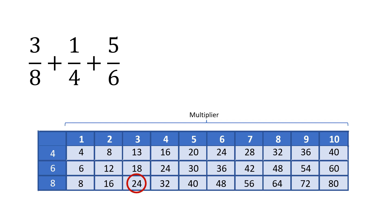Thus, we have to multiply 3 eighths by 3, 1 fourth by 6, and 5 sixth by 4.